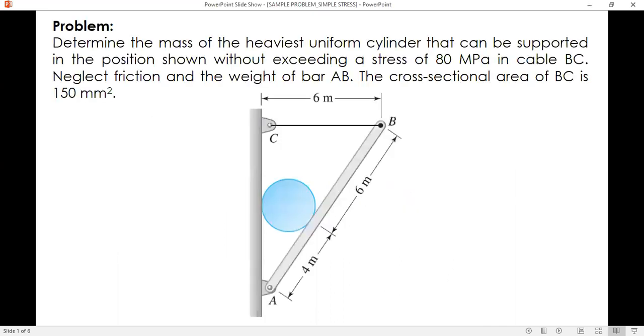Here's the problem. Determine the mass of the heaviest uniform cylinder that can be supported in the position shown without exceeding a stress of 80 megapascals in cable BC. Neglect friction and the weight of bar AB. The cross-sectional area of BC is 150 mm².